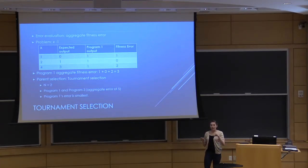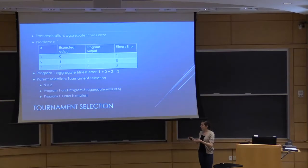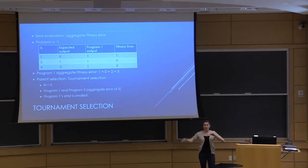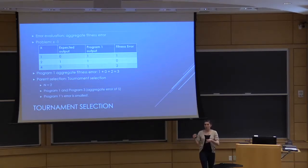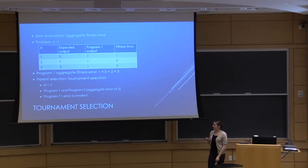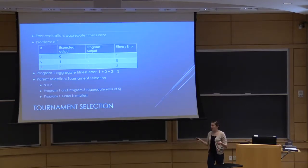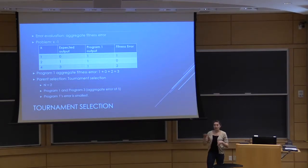In tournament selection, because we're selecting parents, we don't want to select the same parent all the time. The way we force ourselves to choose different parents is: we choose N individuals from the population randomly, then choose the most fit among those to be our parent. In this example with N=2 and 5 programs, if we randomly choose programs 1 and 3, program 1 has aggregate error 3 and program 3 has aggregate error 5, so we choose program 1. But if we had chosen programs 5 and 1, with program 5 having aggregate error 1, we would have chosen program 5 instead.